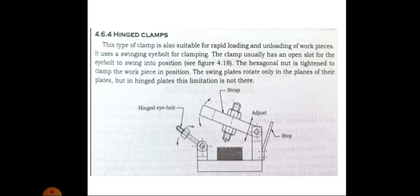The clamp usually has an open slot for the eye bolt to swing into position. The knurled nut is tightened to clamp the workpiece in position. The swing plates rotate only in the planes of their plates, but in hinged plates, this limitation is not there.